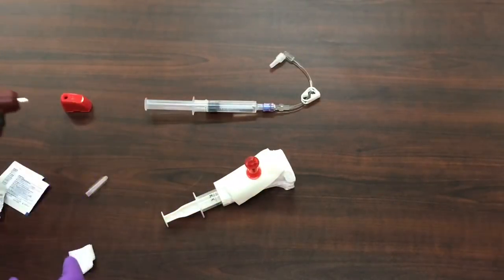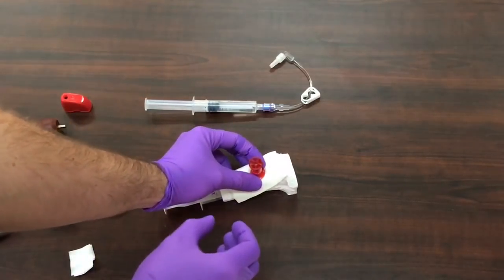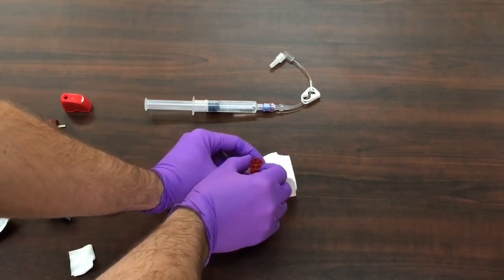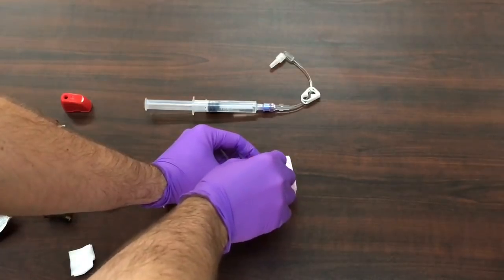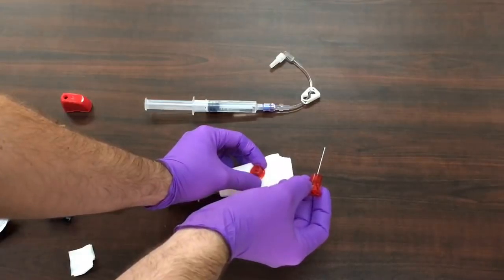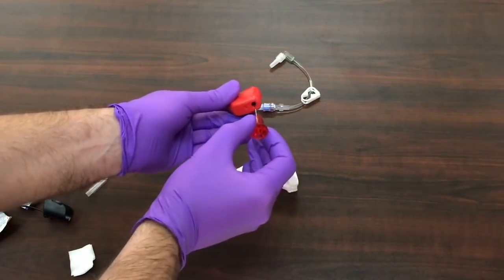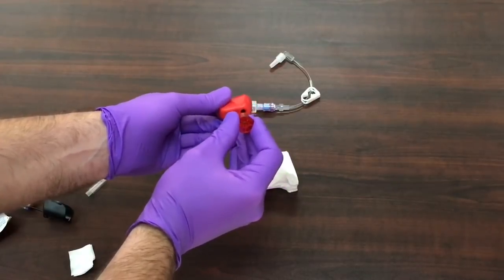Remove the driver. And while stabilizing the hub of the needle, rotate the cap counterclockwise and withdraw the stylet. The stylet should be placed in a sharps container or with the included sharps cap.